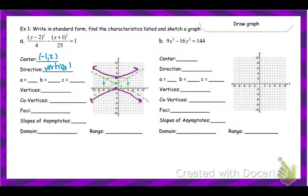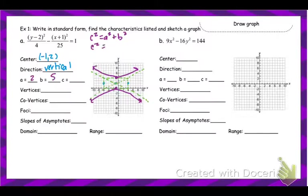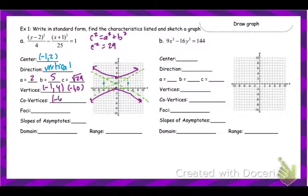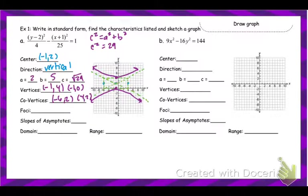How close the curves get to the asymptotes isn't very specific — the only points you really need are the vertices, and you need to make sure your asymptotes are drawn correctly. The a value was 2, b value was 5. For c: c² = a² + b² = 29, so c = √29. Vertices are (−1, 4) and (−1, 0). Co-vertices are (−6, 2) and (4, 2). Since this is vertical, the foci change the y-coordinate of the center, so the foci are at (−1, 2 ± √29).